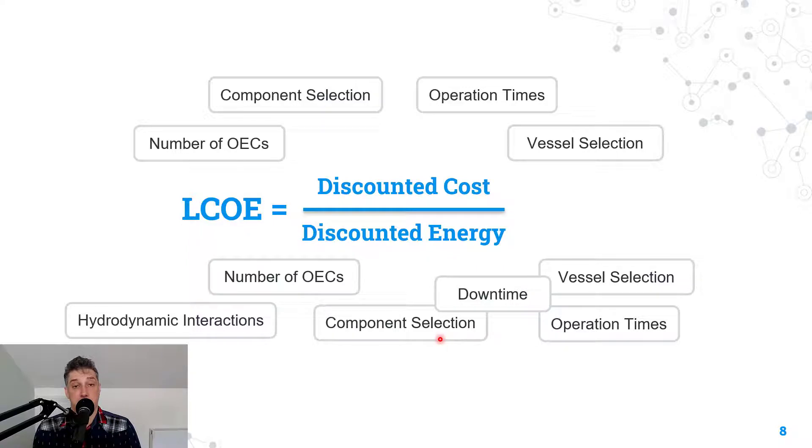Let's have a quick look at the simplified equation for levelized cost of energy. At the top we have the discounted costs over the lifetime of the array. At the bottom we have the discounted energy over the lifetime of the array, and we have a number of factors which contribute to the top and bottom.